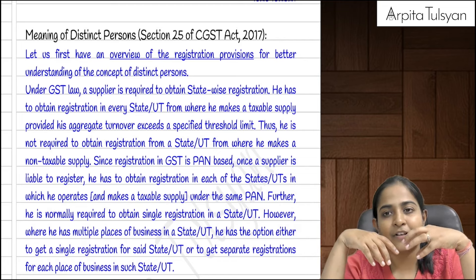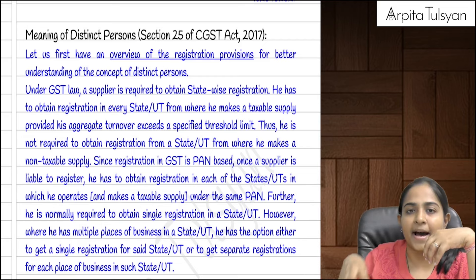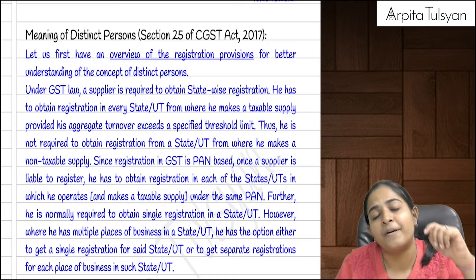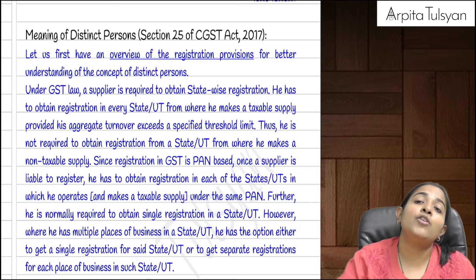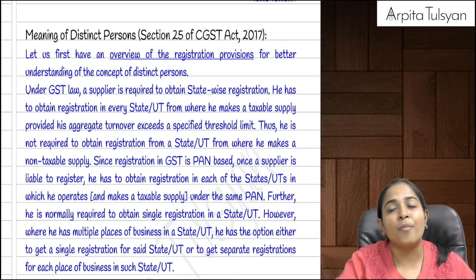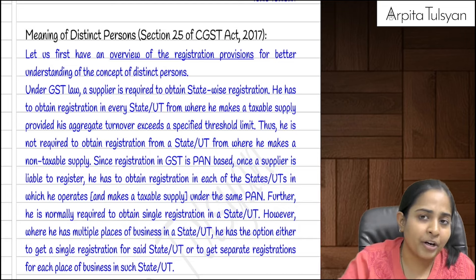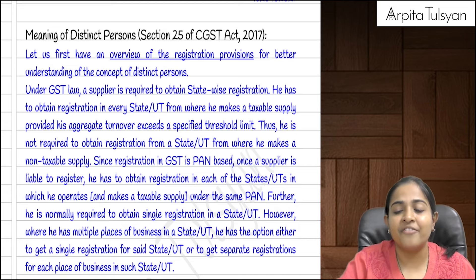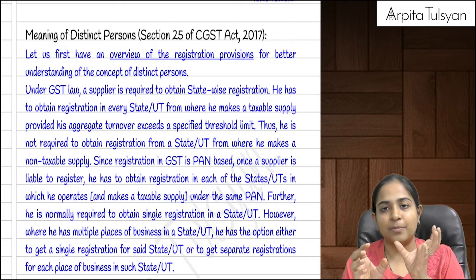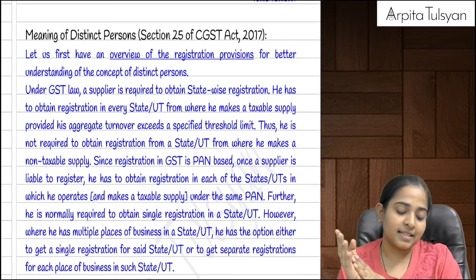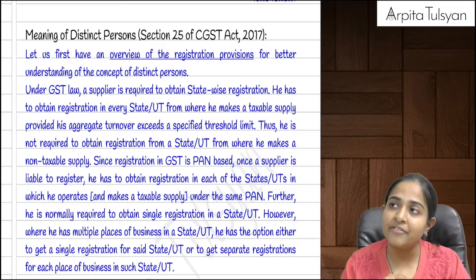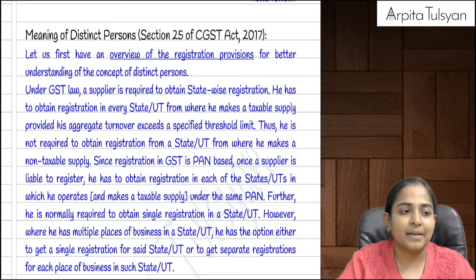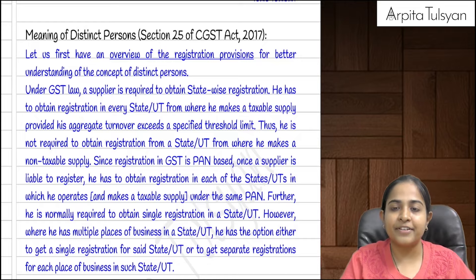If I have an office in Mumbai, Maharashtra and open another office in Pune, Maharashtra — same state — separate registration is not mandatory. But if I choose to take a separate registration within the same state, then any transaction between the Mumbai branch and the Pune branch will also fall under Schedule 1, and even if done without consideration, it will be considered a supply.